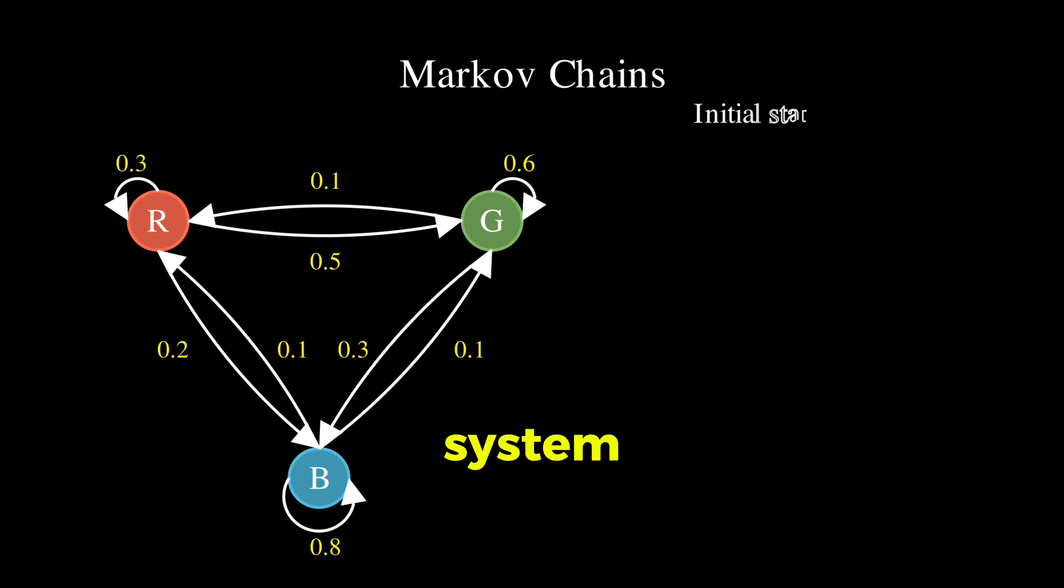We can further represent this system with an initial state vector which shows us the probability of starting in each state, 30% of being in the red state, 20% of being in the green state, and 50% in being in the blue state.